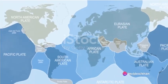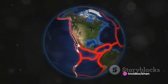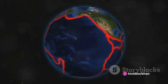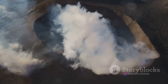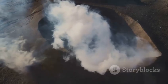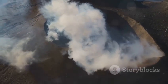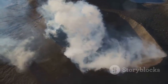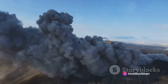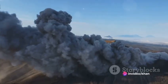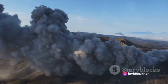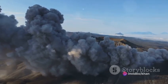Volcanoes are usually not created where two tectonic plates slide past one another. Large eruptions can affect atmospheric temperature as ash and droplets of sulfuric acid obscure the Sun and cool Earth's troposphere. Historically, large volcanic eruptions have been followed by volcanic winters which have caused catastrophic famines.